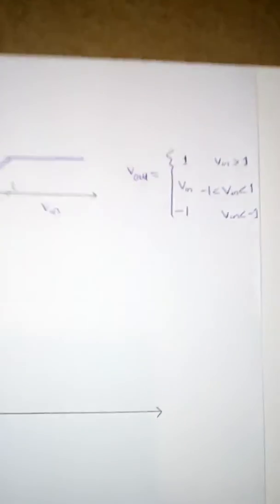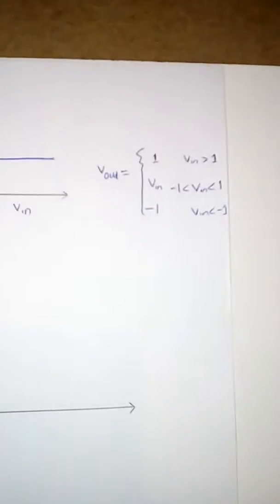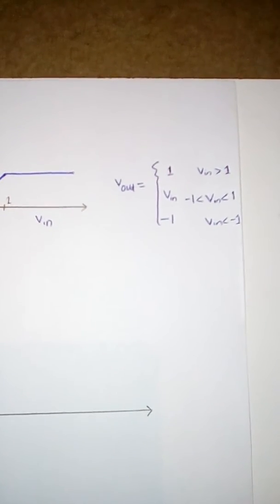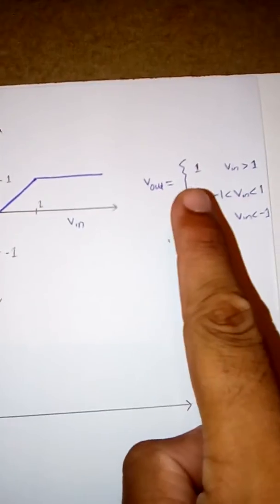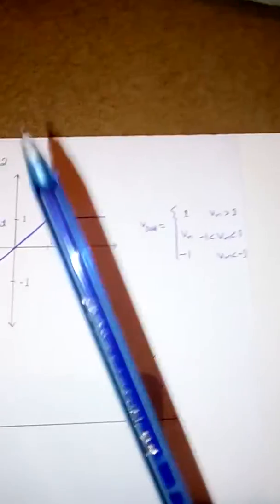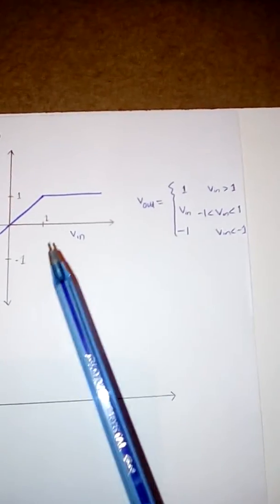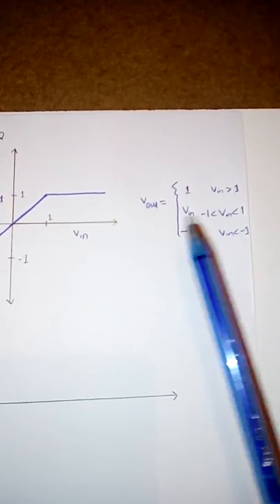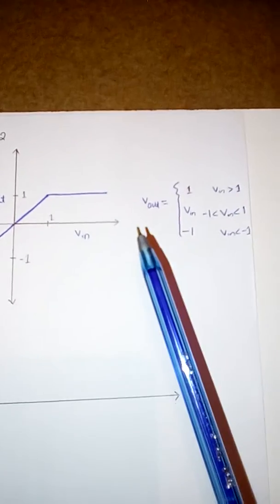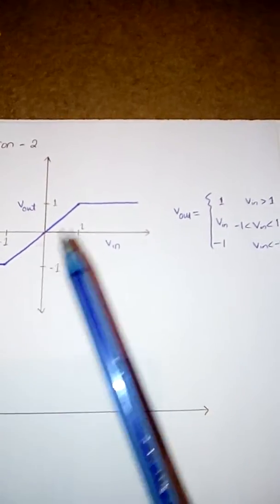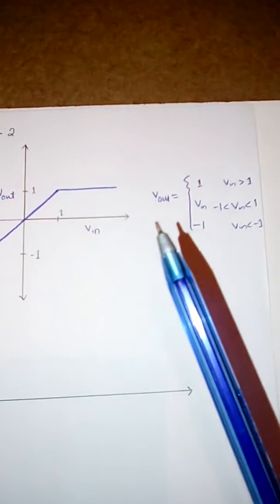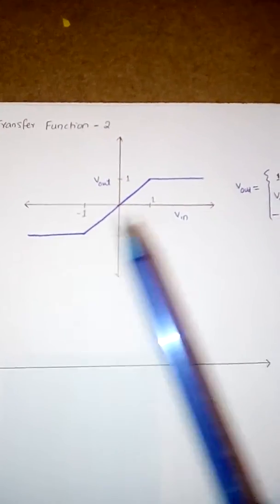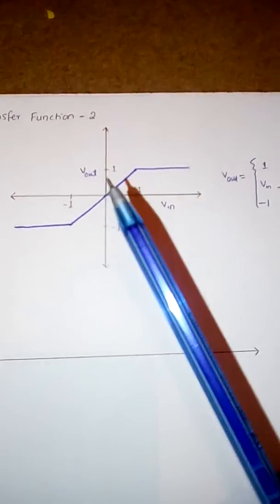The transfer function is written mathematically as: Vout equals 1 when the input is greater than 1, which is shown as a constant horizontal line at 1. Similarly, Vout equals Vin — meaning the output equals the input — in the interval between minus 1 and 1, giving a slope of 1. And Vout equals minus 1 when the input voltage is less than minus 1.